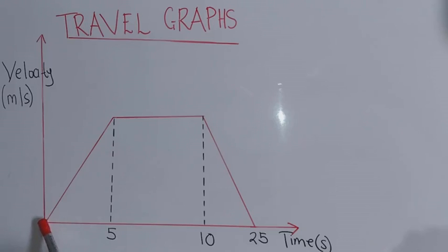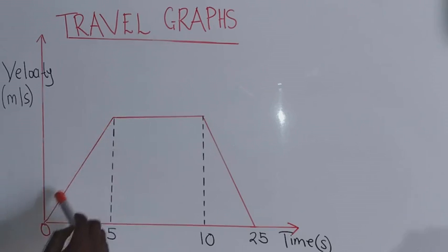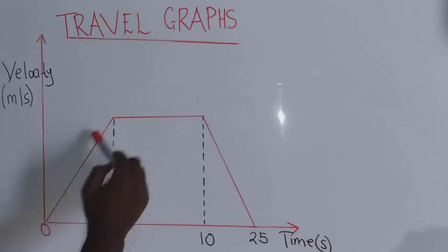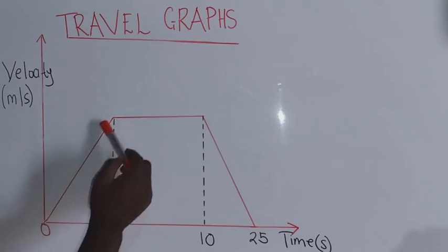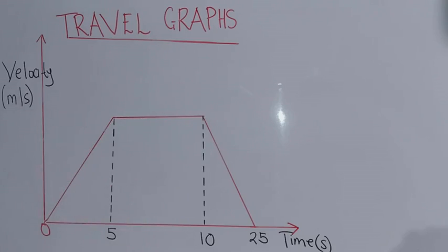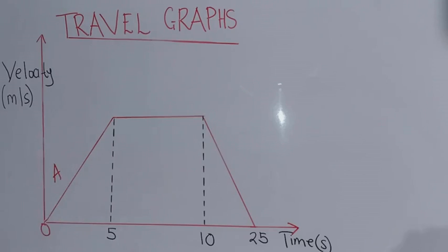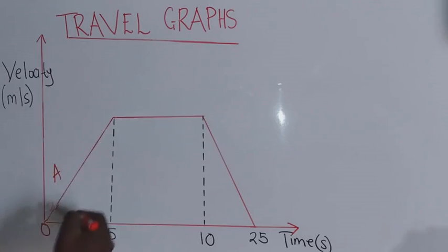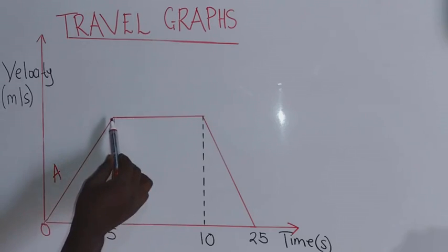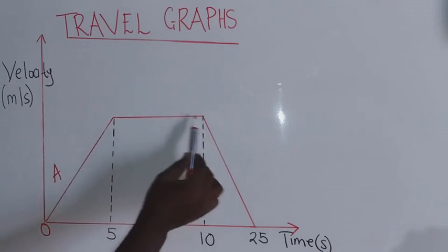From zero up to a certain point, we consider that a particle is moving and accelerating — it is increasing in velocity. From here to here we are going to have acceleration. This acceleration is constant, and this straight line on the graph represents the gradient.